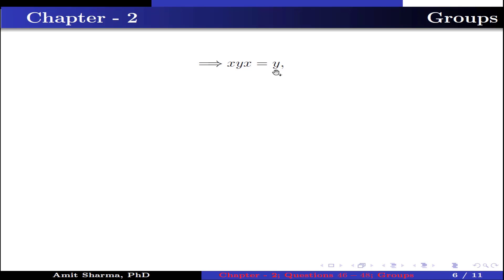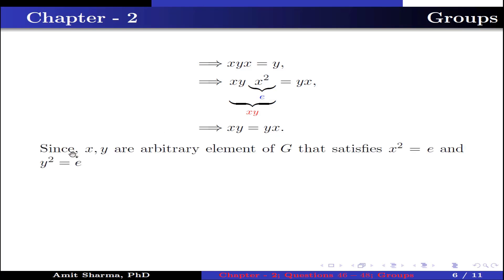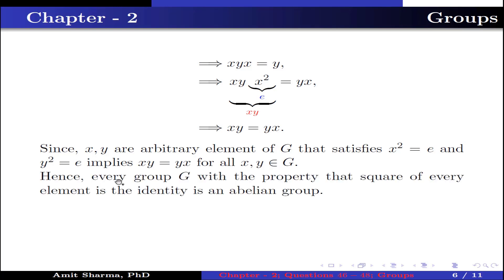Now multiplying x on both sides: xy·x²= yx, and since x² = e, we get xy = yx. Since x and y are arbitrary elements of G satisfying x² = e and y² = e, this implies xy = yx for all x, y in G. Hence every group G with the property that the square of every element is the identity is an abelian group.